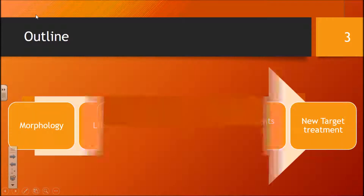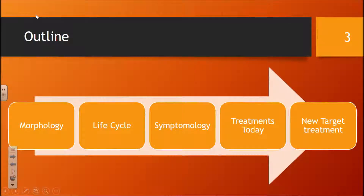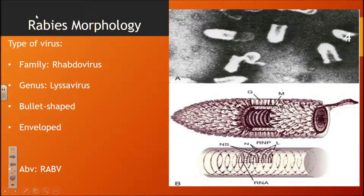The outline of today: we're going to be going over morphology, the life cycle, symptomology, today's treatments, and a new target treatment plan using a revolutionary receptor.